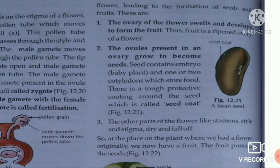The other parts of the flower like the stamens and stigmas dry and fall off, while the ovary develops into the fruit, which protects the seeds. Some fruits are very soft, fleshy, and juicy, like apple, mango, and orange, but some fruits are hard and woody, such as almonds and walnuts. In this manner, different types of fruits are produced.